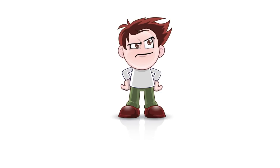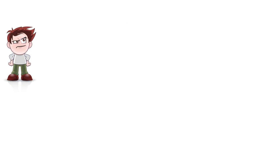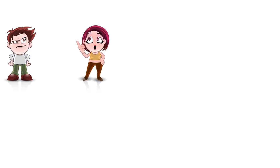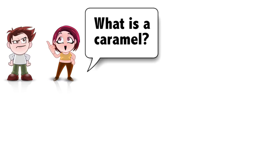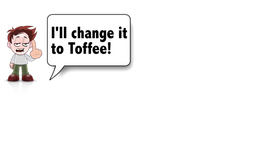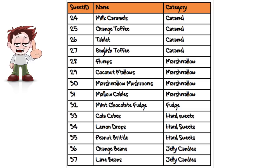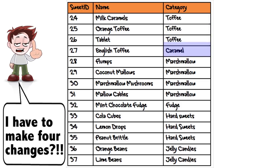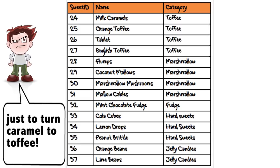But there are some problems with Bob's database. People keep asking Bob what a caramel is, so he decides to change the category name to toffee. In this flat file database, the category caramel is stored four times, which means that Bob has to edit the database four times to make just this one small change. That's a bit annoying.